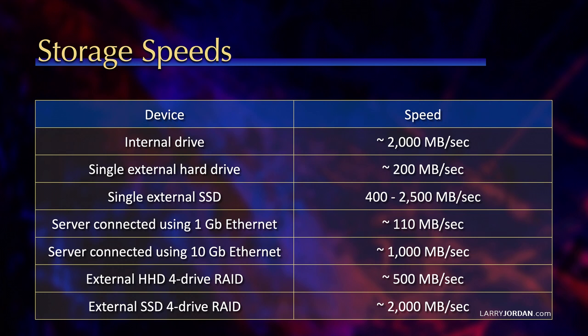If we look at the speeds of different devices, the internal drive on most modern computers — three years old or younger — is transferring data about 2,000 megabytes a second. It could be as high as 2,500, could be as slow as 1,000, but it's really quick because it's an SSD and it moves fast.